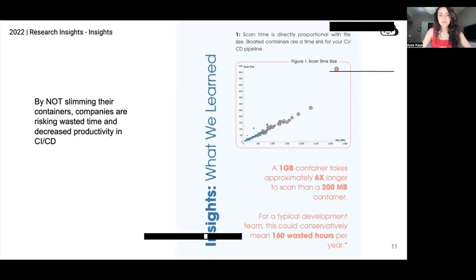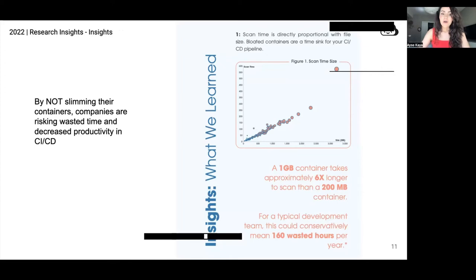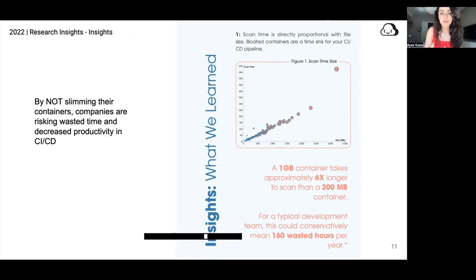The first finding, probably not a huge surprise but interesting to validate, was that by not optimizing their containers, companies might be risking wasted time and decreased productivity in their CI-CD systems. Our analysis showed a nearly perfect correlation between container size and scan time. Meaning that within this set, every 500 megabytes was adding another 50 seconds of scan time. And as images grew larger, we realized it wasn't a linear relationship anymore — it may indicate an S-curve, an exponential relationship for larger container sizes. We find many containers in the field that are significantly larger than these relatively large public containers.